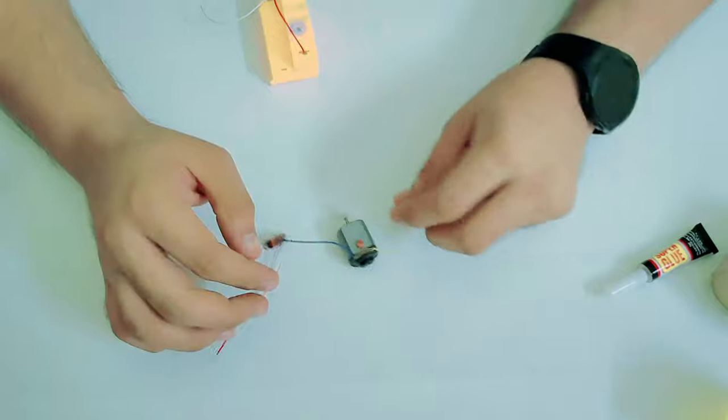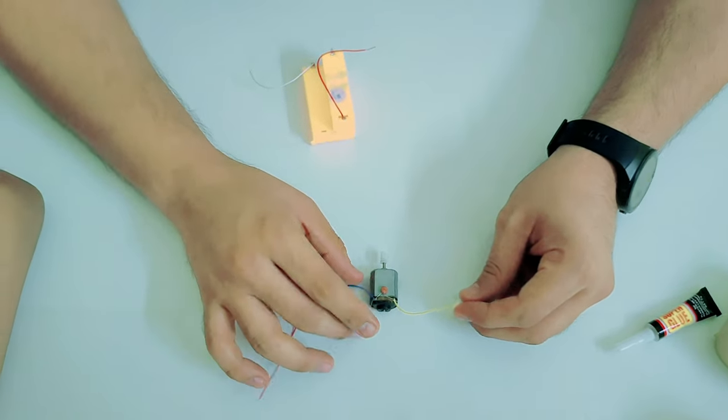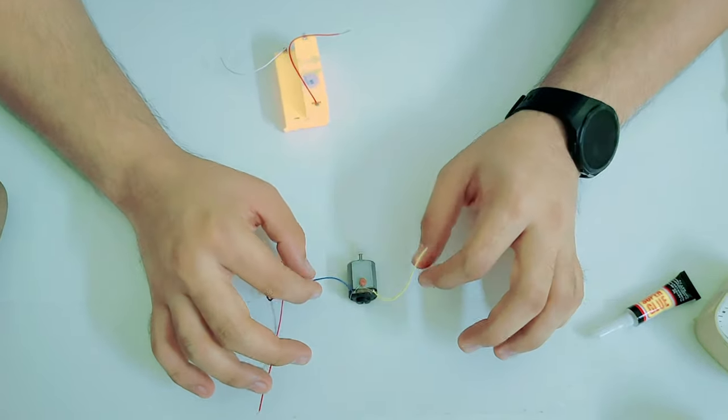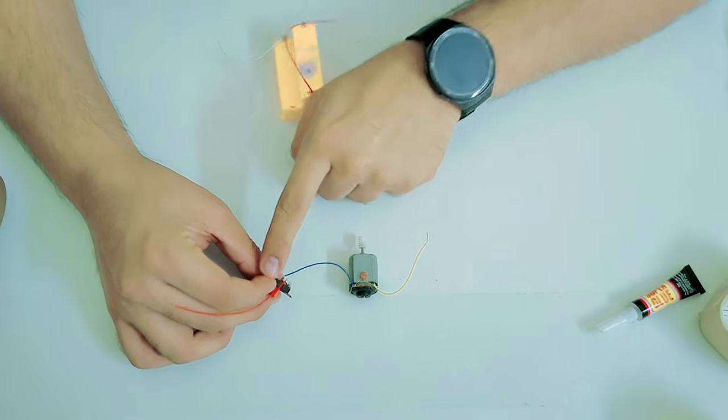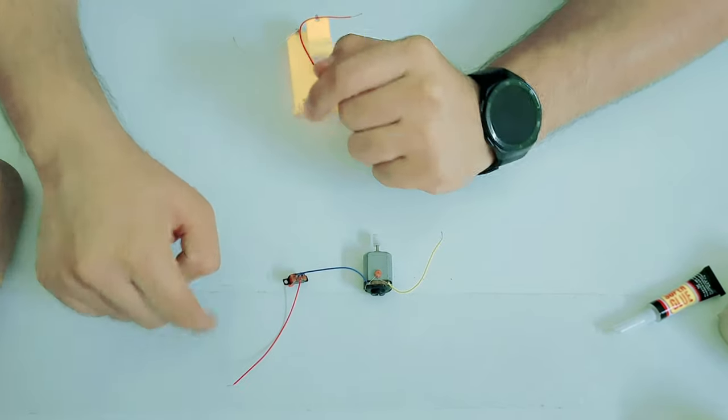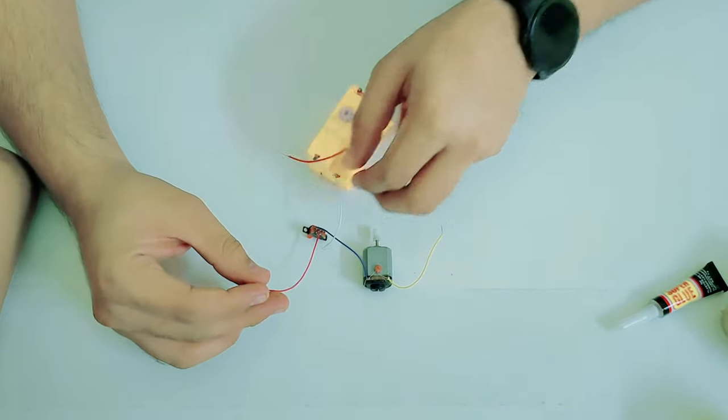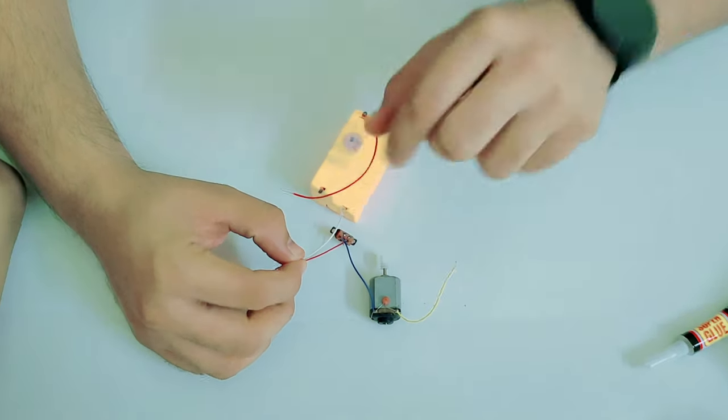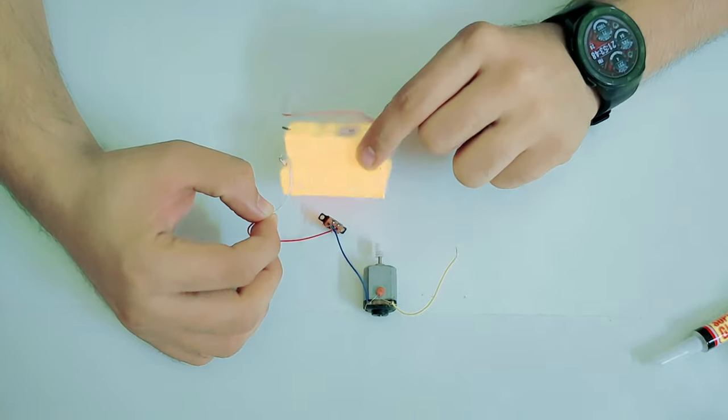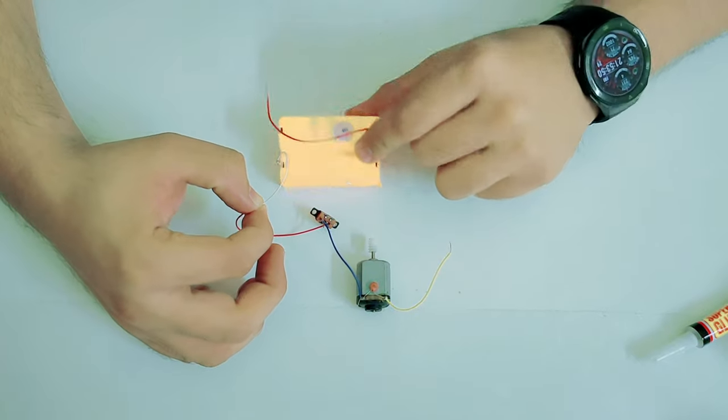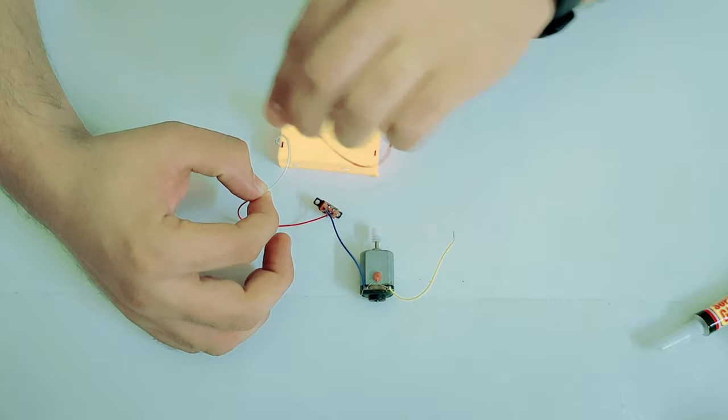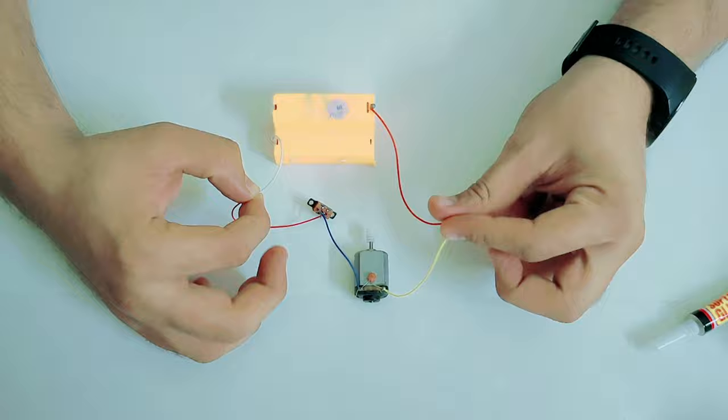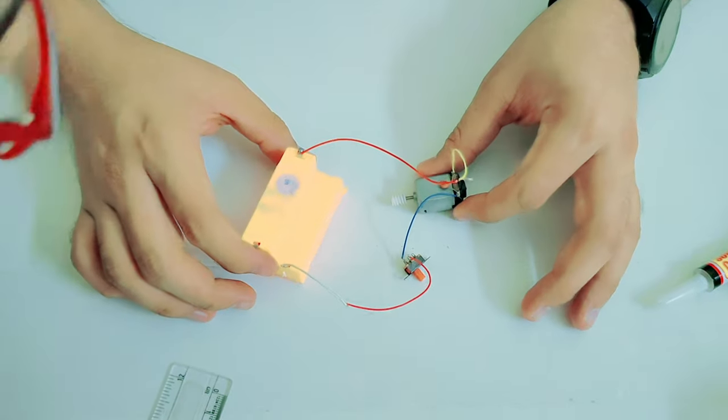The connections are very simple. You have your two wires connecting to the motor here. It goes all the way to the switch. There's a wire connecting from the switch. It is connected to one end of the power. This is the power where you will put your batteries in, and the other is connected to the other end of the motor. Alright, the connection is made.